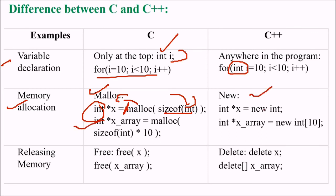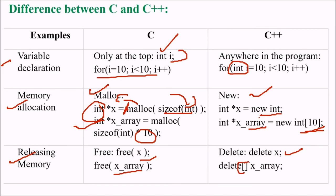In C++, you use new: int *x = new int. For an array, you write new int[10]. To release memory in C, you use free(x) or free(xArray). While in C++, you use delete x for a single variable, and delete[] xArray for deleting an array.